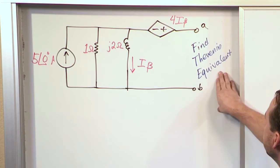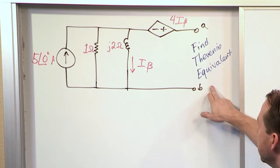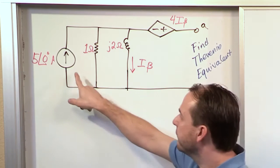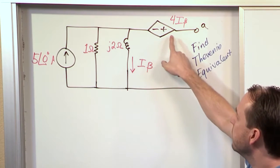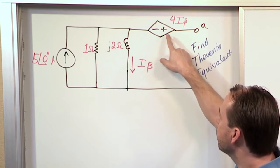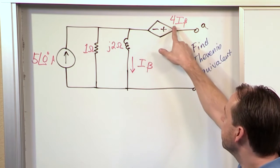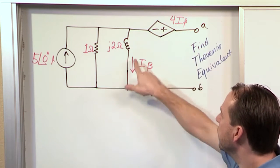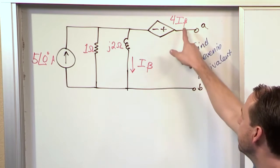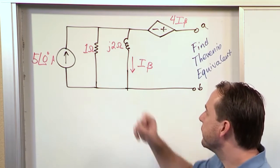Here, we're trying to find the Thevenin equivalent between terminals A and B, but this one's a little trickier because we have a current source here and also a dependent voltage source. So the voltage that appears between these two terminals here is given by four times the current that flows in this branch through the inductor, four times I beta, and we have an inductor of J2 ohms here.